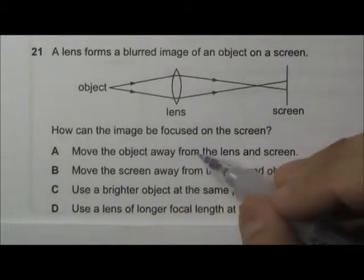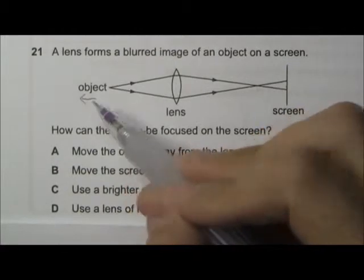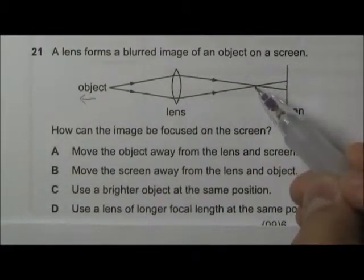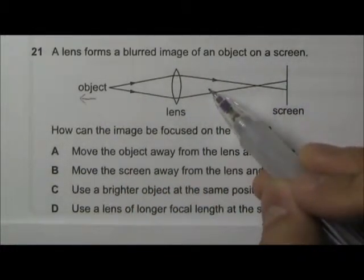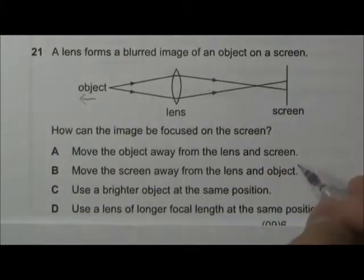Okay, by moving the object away from the lens and the screen, the further you move this object backwards, the image will be formed nearer to the lens. So this will not help the image to be focused on the screen. So this is wrong.